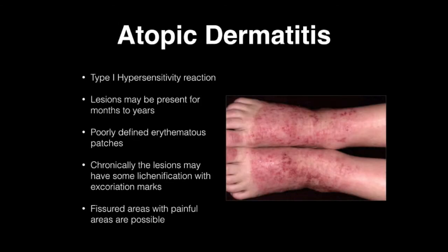The next skin disorder we want to concern ourselves with is called atopic dermatitis. Atopic dermatitis can be a pretty nagging disorder for patients to encounter. It's a type 1 hypersensitive reaction. Lesions are present for months to years. They are poorly defined erythematous patches. Chronically, the lesions may have some lichenification or excoriation marks because these chronically itch. Fissure areas are painful because the skin is more dry and where the patient has scratched, causing some pain. This is commonly associated with allergic rhinitis or asthma.